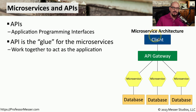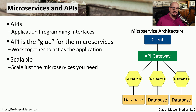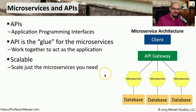All you would need to do as the client is talk to the API gateway, which would then send the request to the appropriate microservice. This greatly extends the scalability of the application — if a certain portion of the application is being used more than others, you can roll out additional microservices to handle that load.